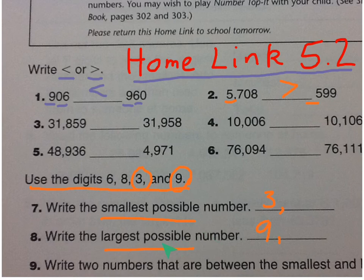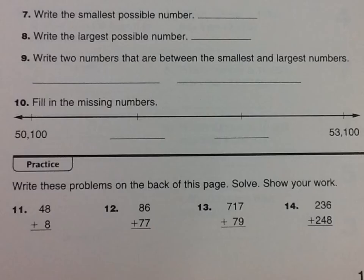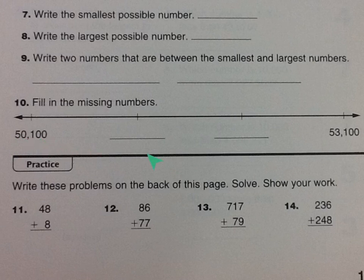Then down here for number 9, write two numbers that are between the smallest and largest number. There are literally thousands of numbers that fall between those two numbers, so just choose any two. For the next part, it says fill in the missing numbers, and here is a number line. Be careful — this is not like a regular number line. You have to look at the pattern. Here you have 50,100 and 53,100, so figure out which place value is changing as you move along the number line — you can't just write 50,101, 50,102.